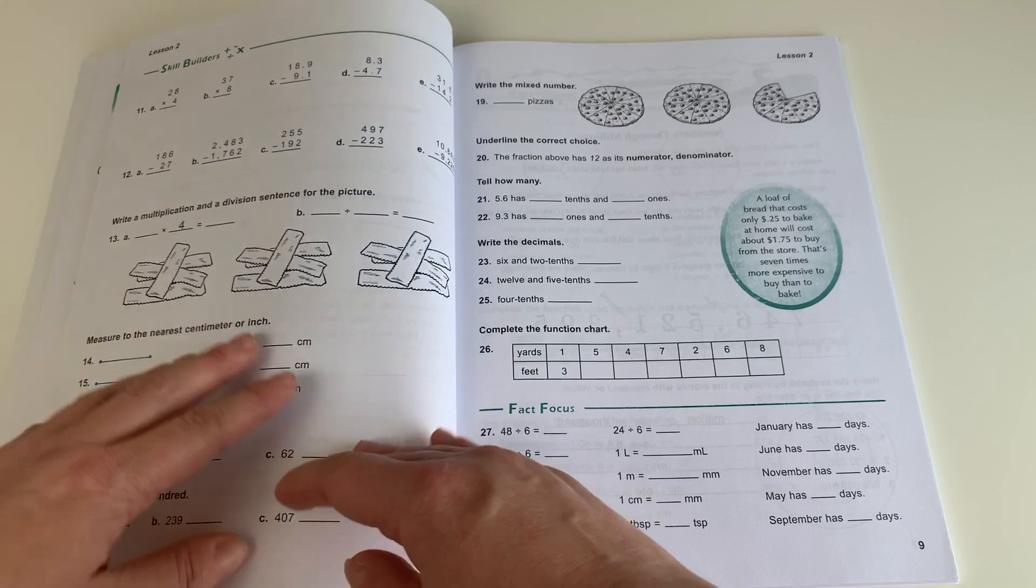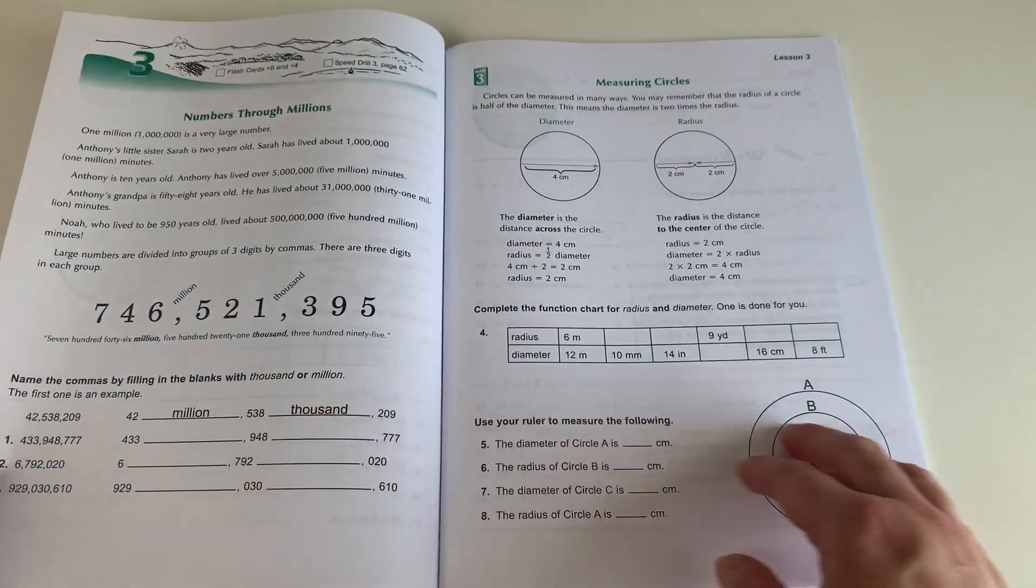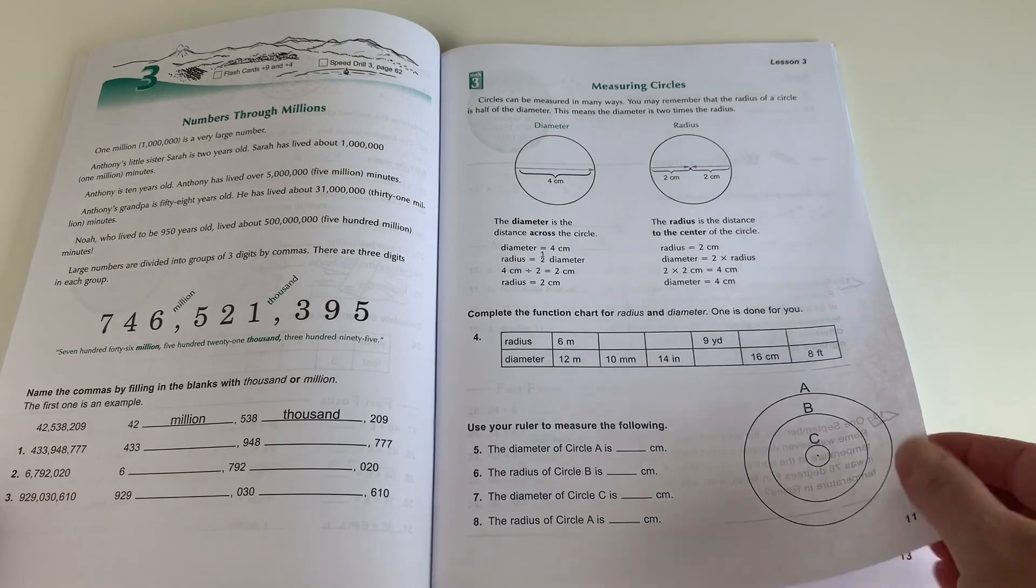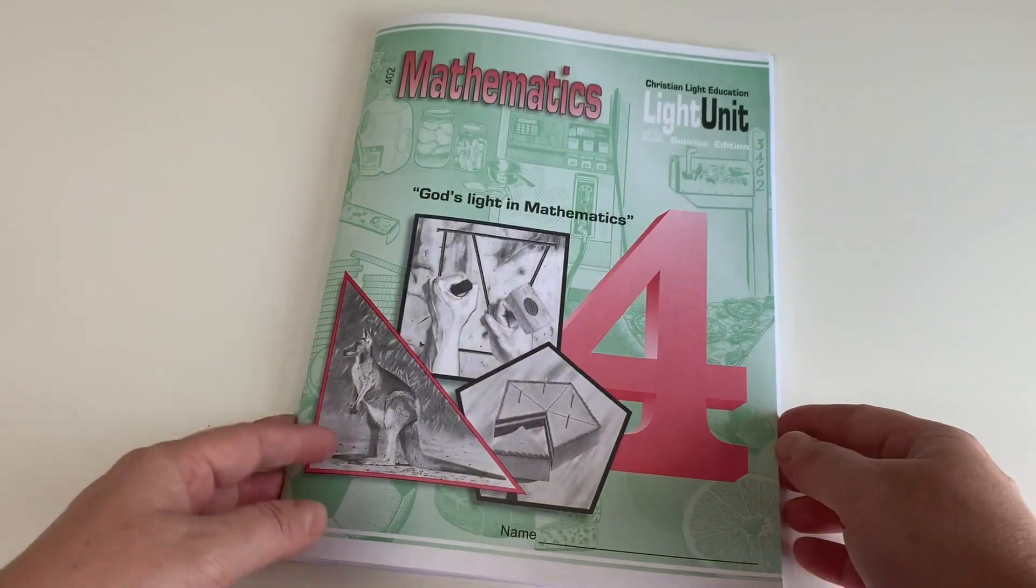So it's a spiral method, which means it just reviews the concepts over and over again so your child really gets familiar with all of these new math concepts. So I love the way this math teaches and we have really enjoyed it.